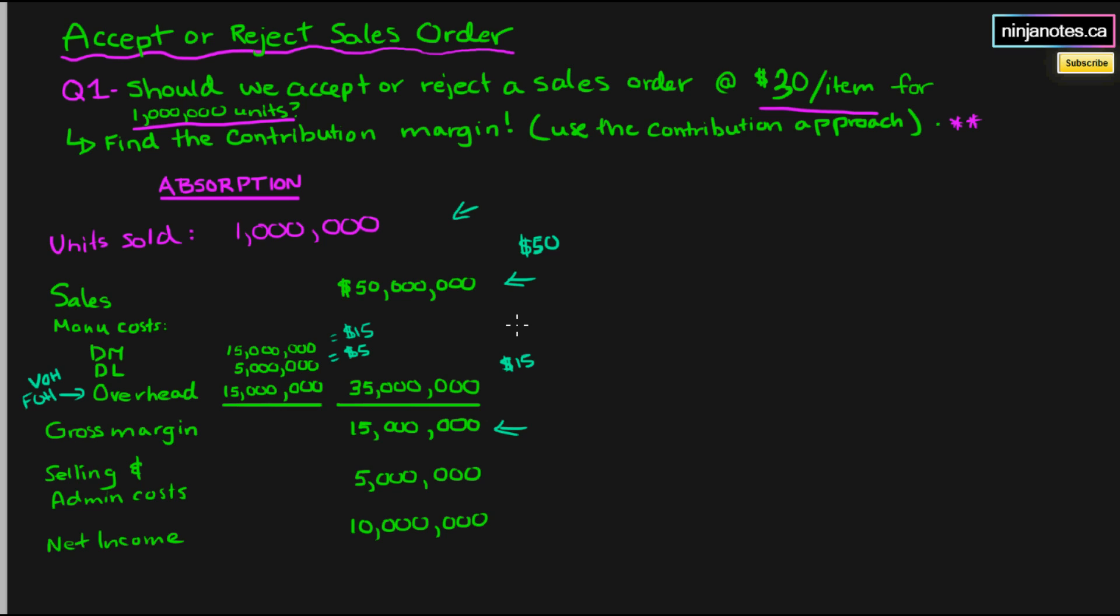Well, if we were selling it for thirty dollars an item, we would get thirty dollars of sales per item. Our direct materials would be fifteen per item, our direct labor cost would be five, and our overhead would be fifteen per item. Which would essentially be fifteen, fifteen, five, thirty-five dollars of cost, thirty dollars of revenue. This would lead to a decision of rejecting. But is this right? No, it is not right, and this is why.